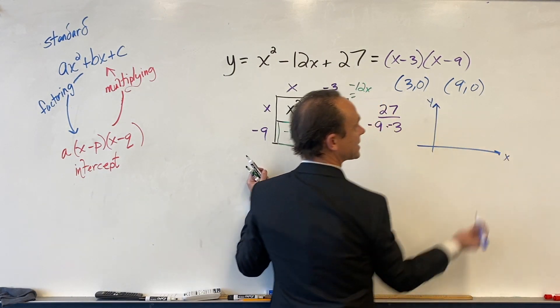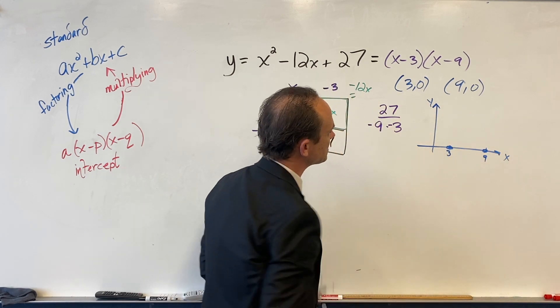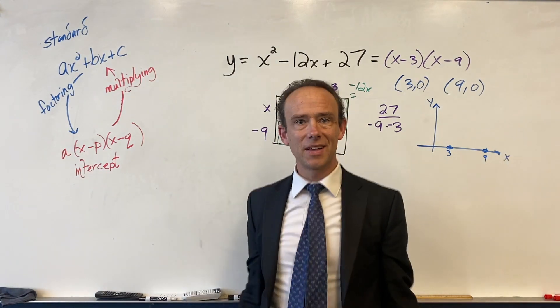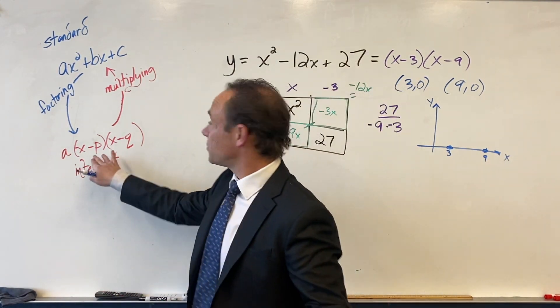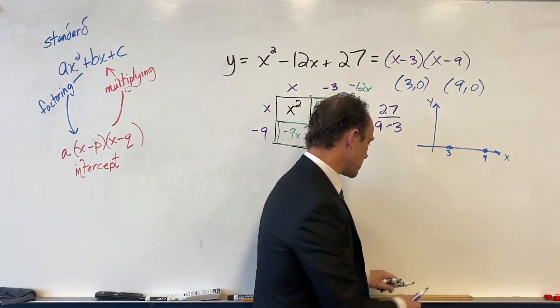Because the x-intercepts are always about the value of y that makes x zero. Oh my gosh. So those are my x-intercepts. Cool. So intercept form reveals what are called roots of the equation. Right? These are called the roots of the equation.